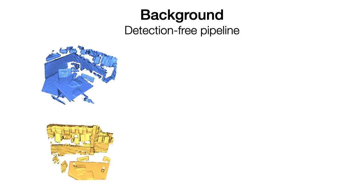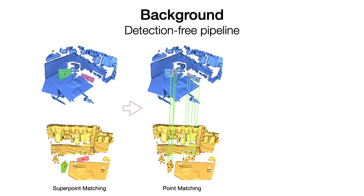On the other hand, detection-free methods first extract a set of sparse superpoint matches, which are then refined to dense points from their neighboring regions. The performance of this pipeline is greatly affected by the superpoint correspondences.